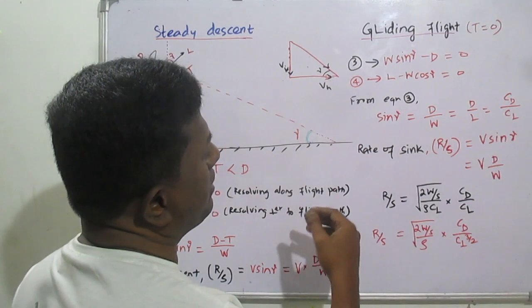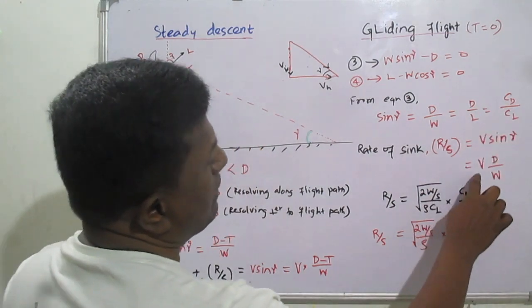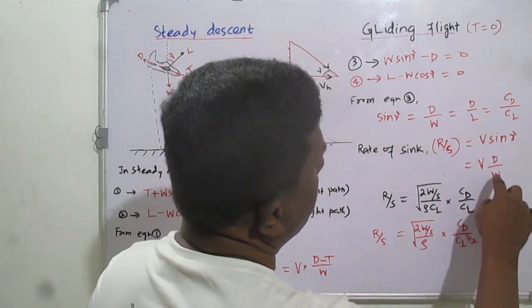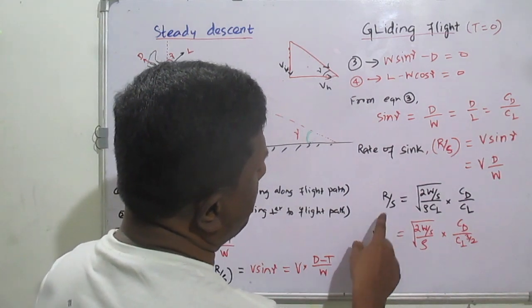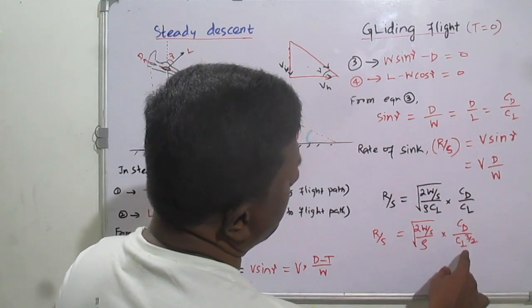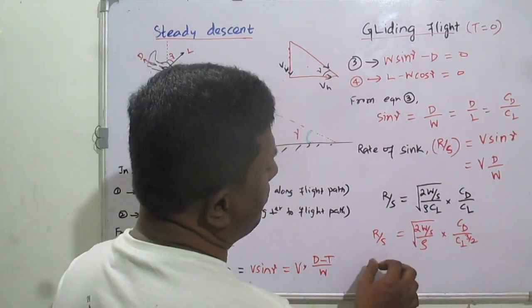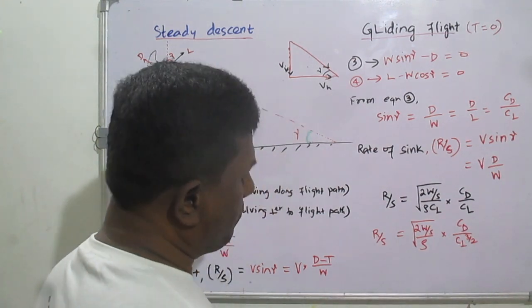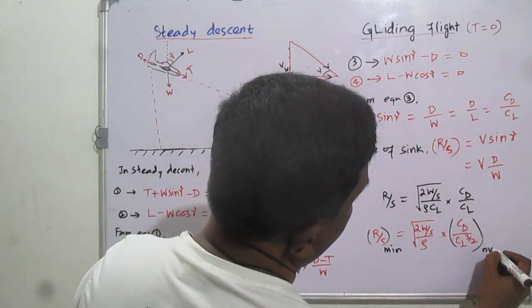For rate of sink in gliding flight, similar to climbing flight where rate of climb = V sin θ, here the rate of sink = V sin γ. This works out to V × (D/W), which converts to a form involving C_D / C_L^(3/2). This is the equation for obtaining the rate of sink.